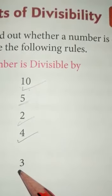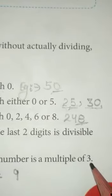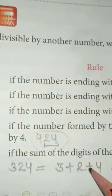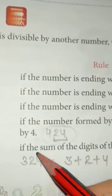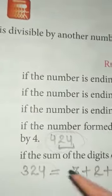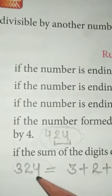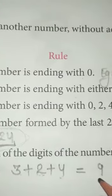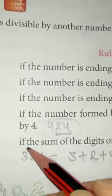Next is the divisibility rule for 3. If the sum of the digits of the number is a multiple of 3, that means that number is divisible by 3. Like 324 — we sum the digits: 3 + 2 + 4 = 9. Since 9 comes in the table of 3 (3 × 3 = 9), the whole number 324 is divisible by 3.